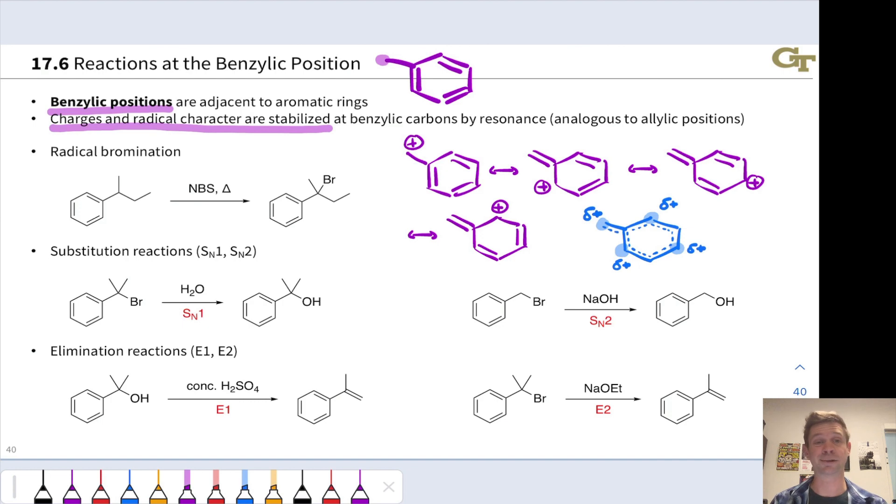The same is true of anions and radicals. We could draw analogous resonance forms for the benzylic anion and radical as well, and this enables a lot of chemistry at benzylic positions, some of which you may have seen before.